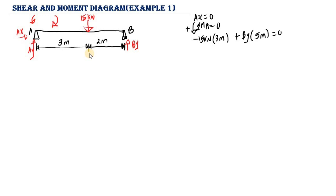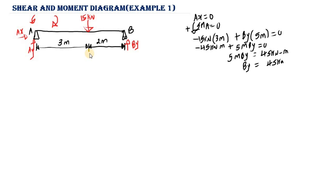So negative 15 multiplied by 3 gives us negative 45 kilonewton-meters, plus 5-meter times By equals zero. Moving negative 45 to the right side: 5By equals 45 kilonewton-meters. Dividing both sides by 5 gives us By equals 9 kilonewtons. We have a positive value, so our assumption of By acting upward is correct.